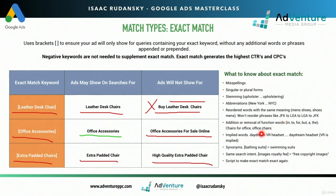Another big one: addition or removal of function words such as 'in,' 'to,' 'for,' 'but,' 'a,' 'the.' So if my exact match keyword is 'chairs for office,' Google retains the right to remove the function word and ignore it. So if somebody searches for 'office chairs' or 'chairs office,' then Google retains the right to trigger that exact match keyword because they're removing the function word 'for.'